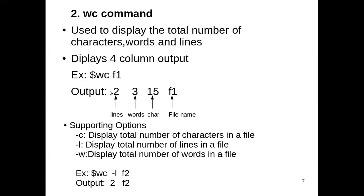Suppose we want only the number of lines, or only the number of words, or only the number of characters. For that, there are supporting options: hyphen c, hyphen l, and hyphen w. Using wc hyphen l gives only the number of lines in the file. Using wc hyphen c gives only the number of characters. Using wc hyphen w gives only the number of words. By default it gives four-column output, and to get only a particular column output, we use the options hyphen c, hyphen l, or hyphen w.